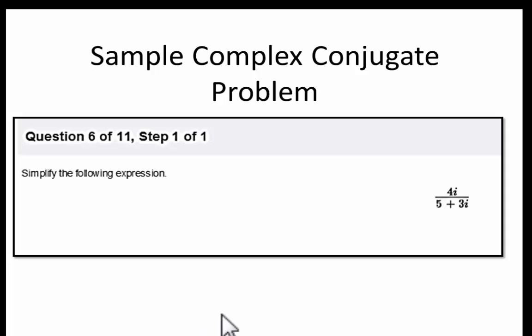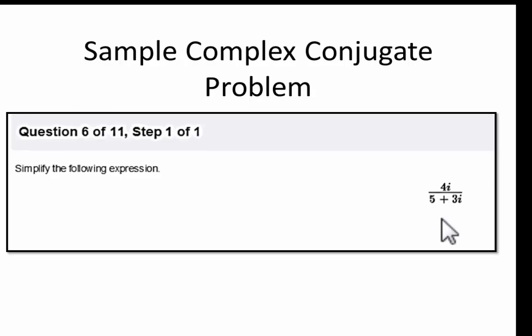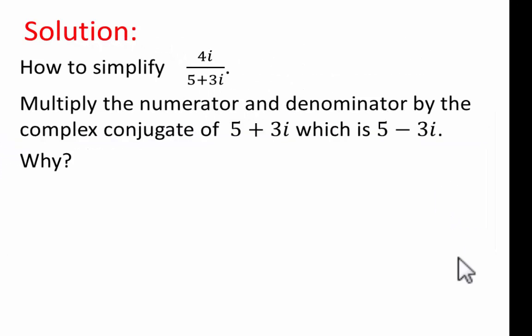What we have is a question where we're supposed to simplify the following expression, and this is what it is. It's 4i divided by 5 plus 3i. How do we simplify 4i divided by 5 plus 3i?